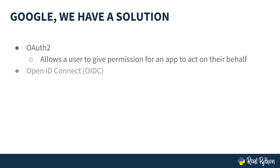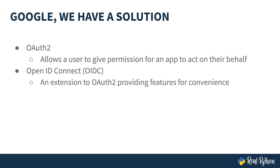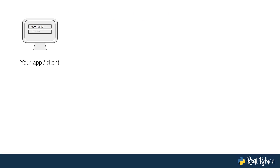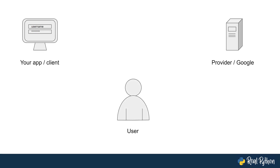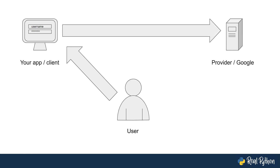The OIDC specification is an extension to OAuth 2. There are three major players in this process. First is your app, also called the client. Then there is the provider, and this is Google. Finally is the user. The user will try to log into the client, and the client will then ask for permission from the user to log them in using a Google account.